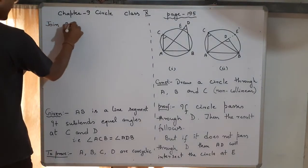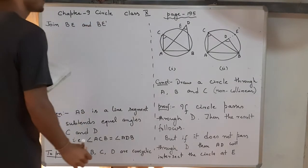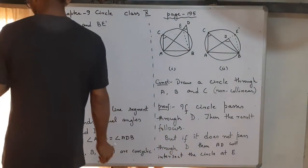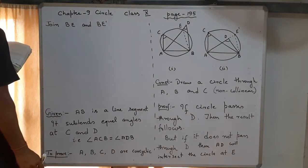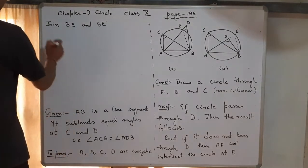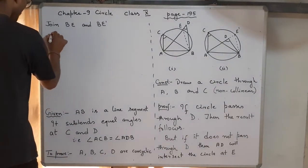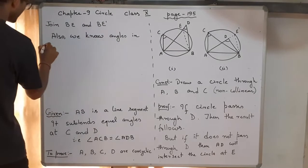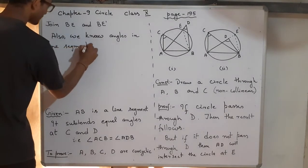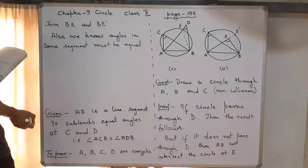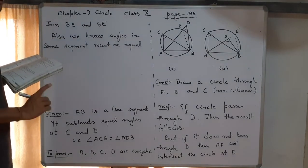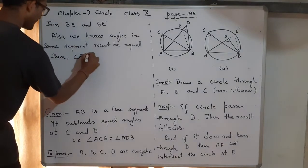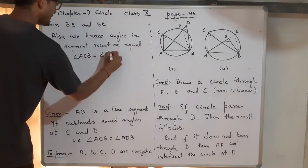We join DE and DE-dash. Now by Theorem 9.5, angles in the same segment must be equal. This means angle ACB must equal angle AEB, since both subtend arc AB from the same side. So angle ACB equals angle AEB.